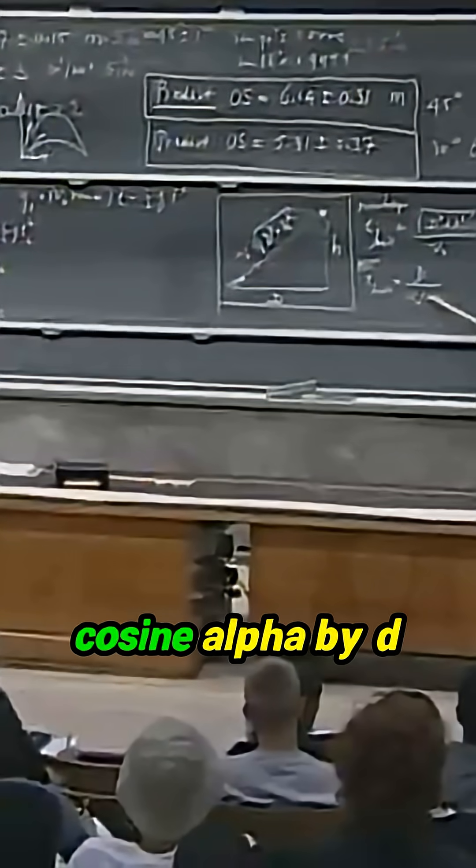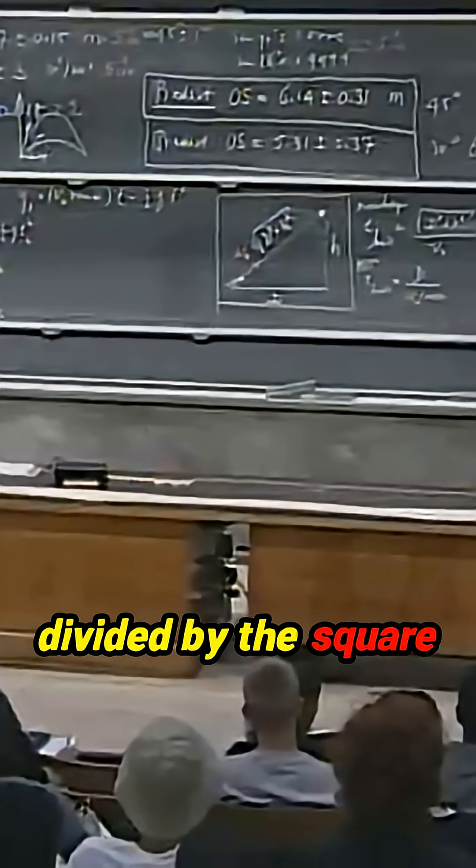So I can replace this cosine alpha by d divided by the square root.